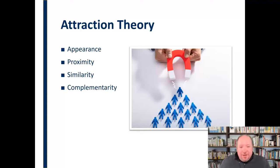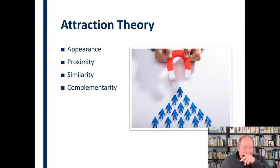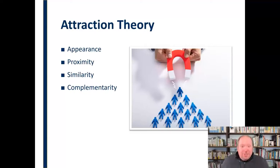We like people who are complementary to us, meaning they fill a need within us — maybe something we don't do well ourselves. We don't necessarily like people to be 100% like us because we're already like that. We like people who are generally similar to us, but also fill a need.